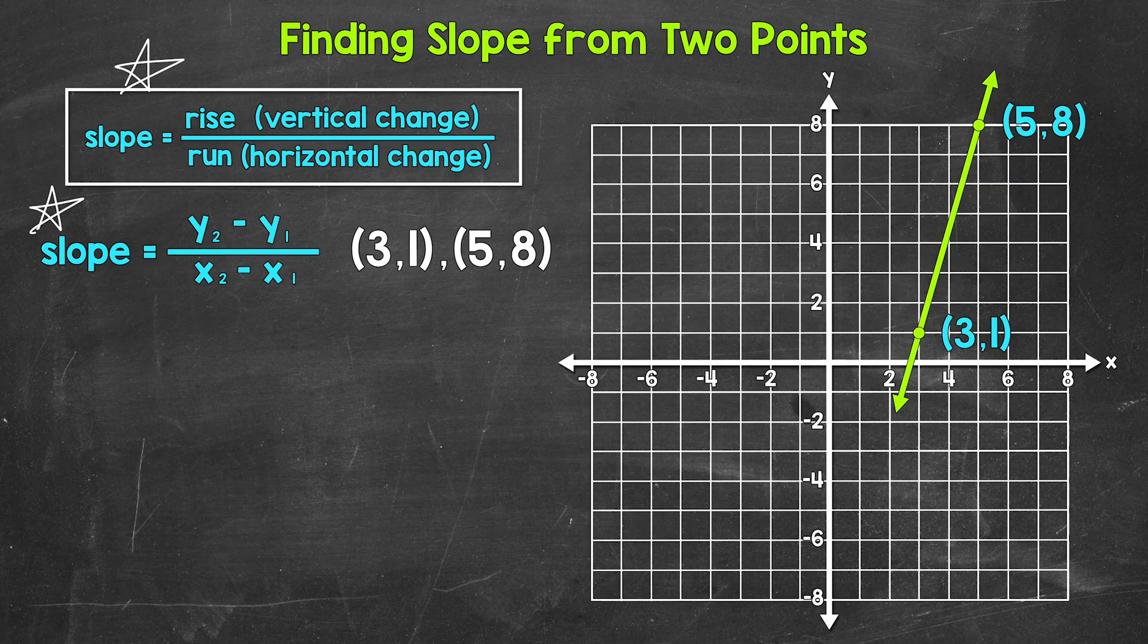We use this formula right here. Slope equals y2 minus y1 over x2 minus x1. y2 minus y1 gives us our vertical change. And x2 minus x1 gives us our horizontal change. So this is still rise over run here. We're just using the coordinates of the two points to find the rise and run. Now you'll notice our points are at 3,1 and 5,8. We need to pick our first point and our second point.